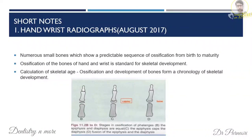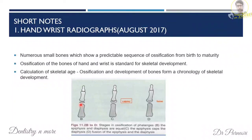Hand-wrist radiographs as a short note: the hand-wrist radiograph consists of numerous small bones showing a predictable sequence of ossification from birth to maturity. This ossification is a standard for skeletal development, from which we calculate skeletal age. Mention the three stages of ossification of phalanges: initially the epiphysis is smaller than the diaphysis; then they become equal; then there is capping; then fusion of the epiphysis and diaphysis.